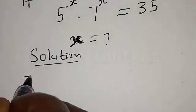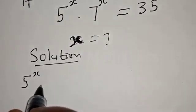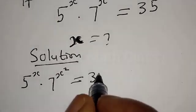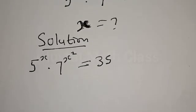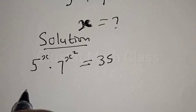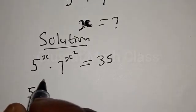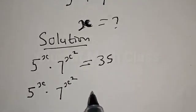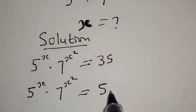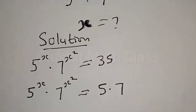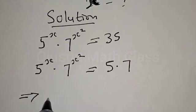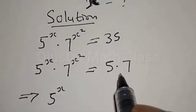We have 5 raised to power x multiplied by 7 raised to power x squared is equal to 35. This can be rewritten as 5 raised to power x multiplied by 7 raised to power x squared is equal to 35, where 35 is 5 multiplied by 7.